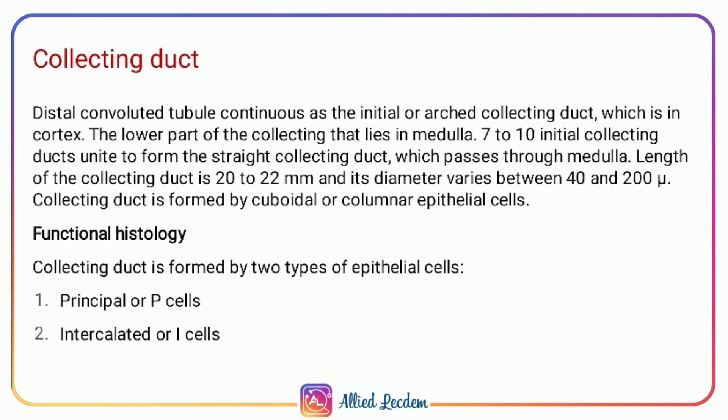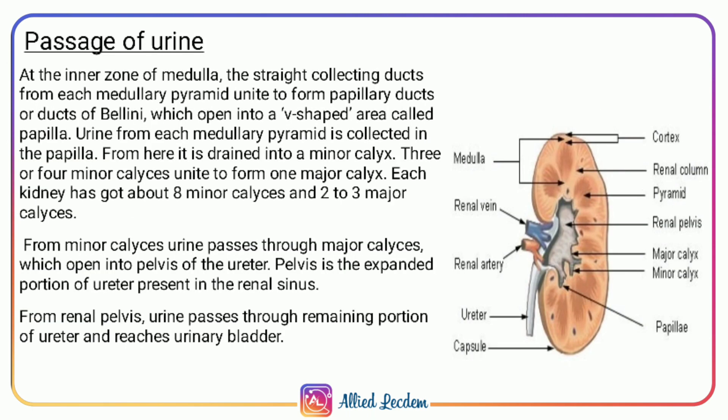The collecting duct is formed by cuboidal or columnar epithelial cells. Functionally, the collecting duct is formed by two types of epithelial cells: principal cells (P cells) and intercalated cells (I cells). In the inner zone of the medulla, the straight collecting ducts from each medullary pyramid unite to form papillary ducts, which open into V-shaped areas called papillae.